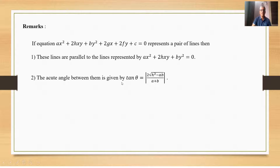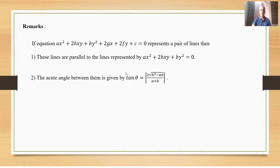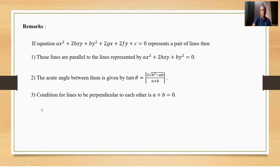The acute angle between the lines is given by tan θ = (formula). For the homogeneous second-degree equation, the acute angle is given by the same tan θ formula. For the general second-degree equation representing a pair of lines, the same formula applies to find the acute angle. The condition for lines to be perpendicular to each other is a + b = 0.